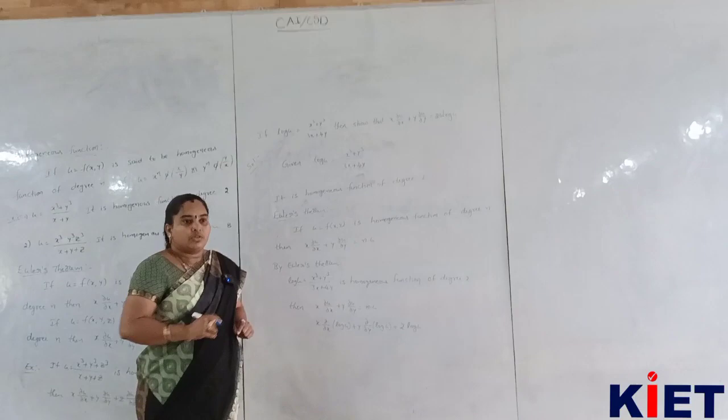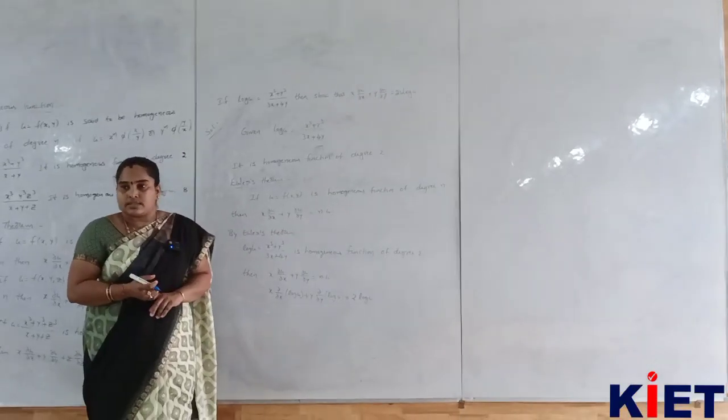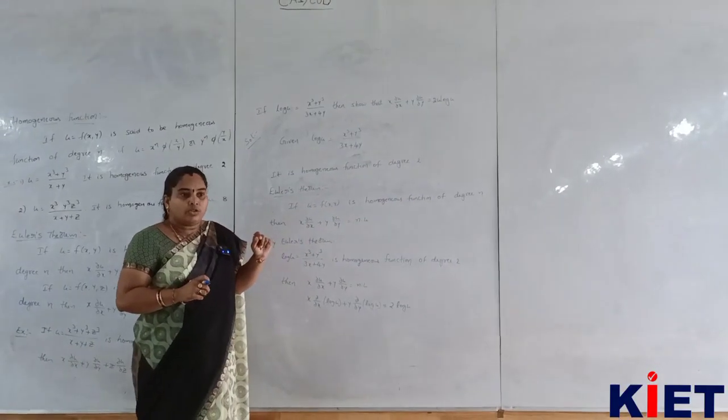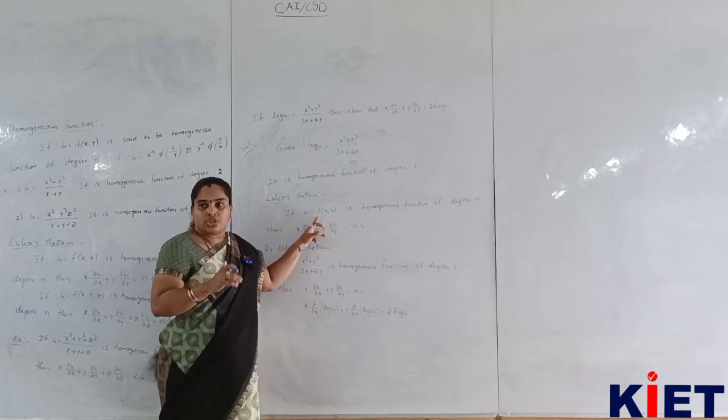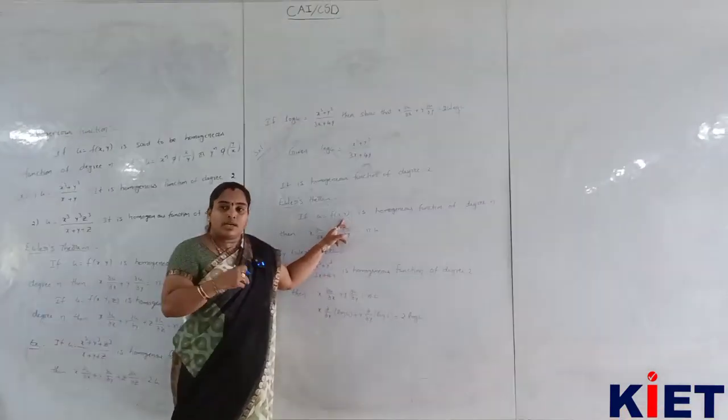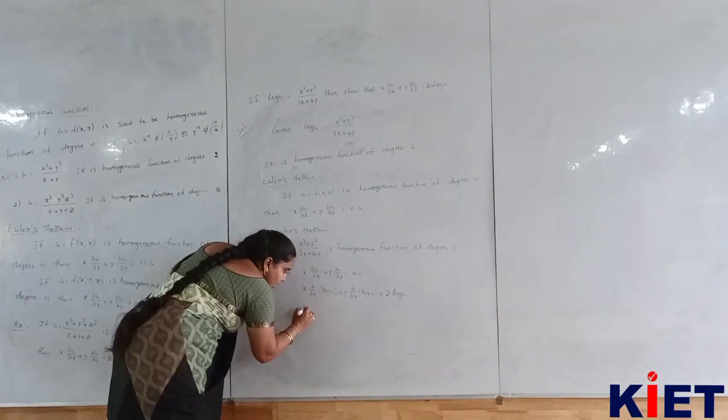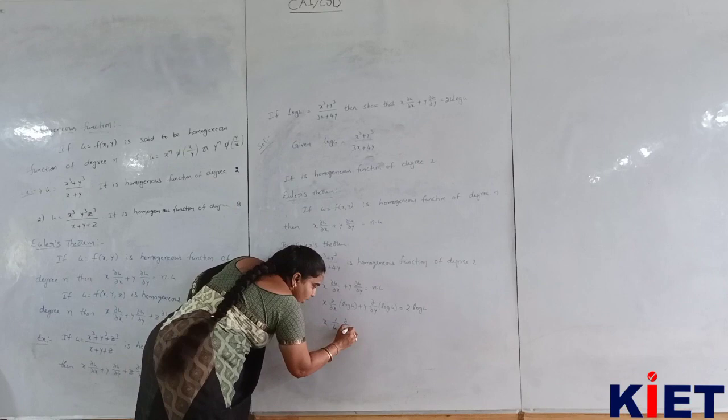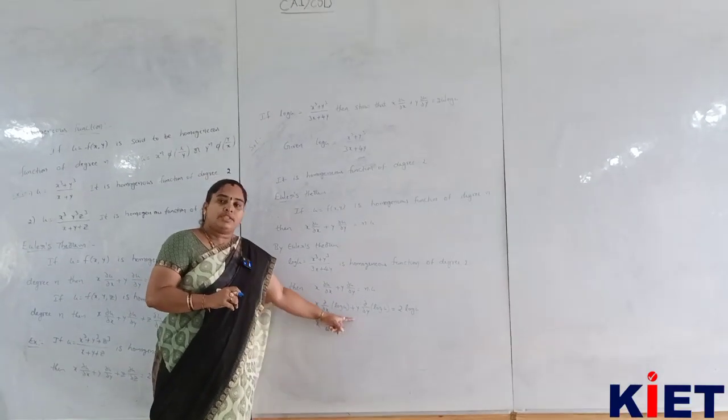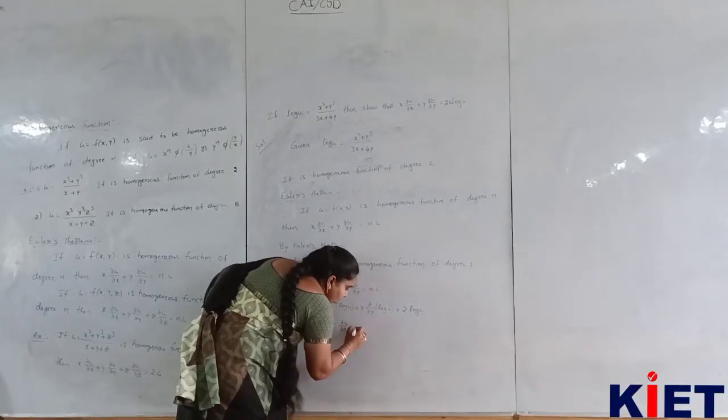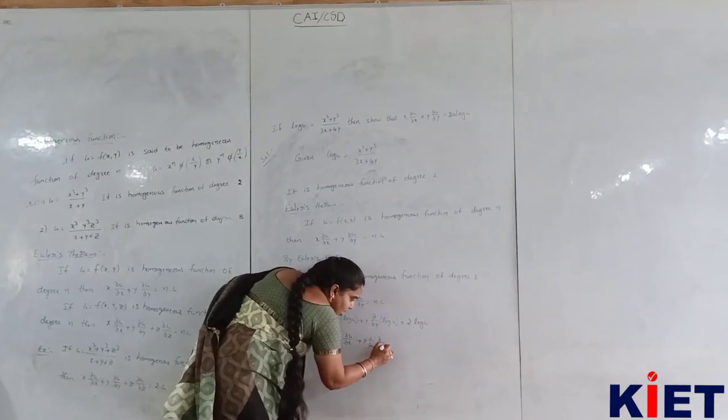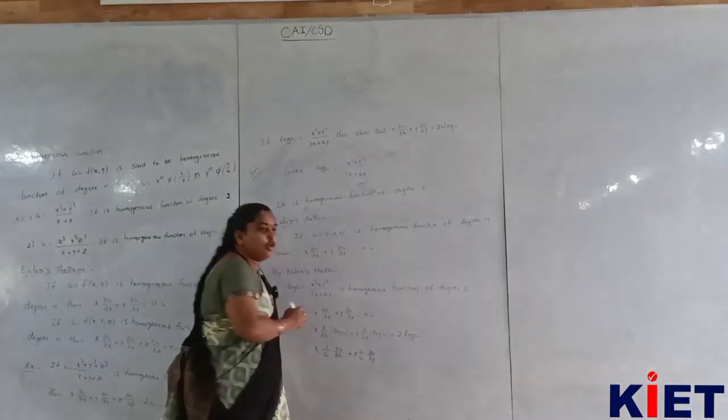∂/∂x of log u is 1 by u, which is nothing but ∂u/∂x. Plus, similarly ∂/∂y of log u is 1 by u ∂u/∂y. That is equal to 2 log u.